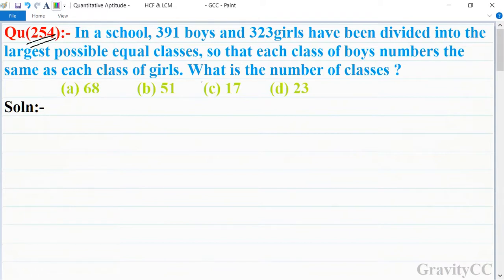What is the number of classes? In this question, we have a school with 391 boys and 323 girls. We need to divide them so that classes have equal number of girls and equal number of boys.